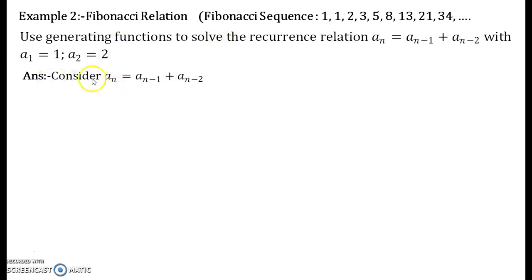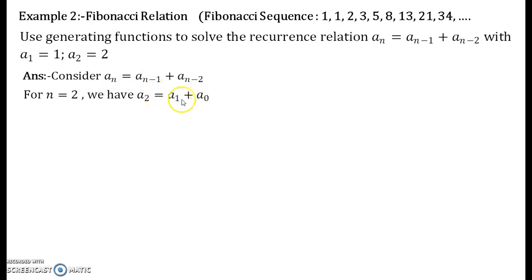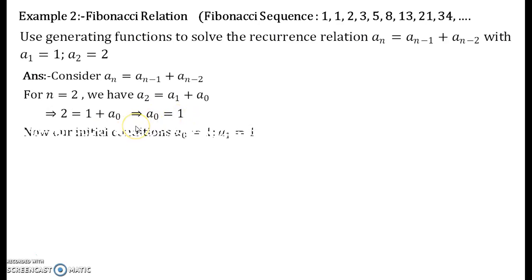Consider the recurrence relation. Plugging n equal to 2 into this recurrence relation, we obtain a_2 equals a_1 plus a_0. Solving for a_0 we obtain a_0 equals 1. So now our initial conditions become a_0 equal to 1 and a_1 equal to 1. The starting term is 1 and the next term is also 1.